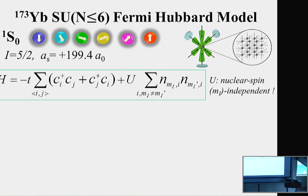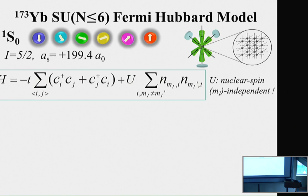In our experiment, we successfully implement the SU6 Fermi-Hubbard model by working with Ytterbium-173, which has nuclear spin 5/2 and repulsive interaction with a positive scattering length. The SU6 Fermi-Hubbard model is given by this Hamiltonian, where the on-site interactions are nuclear-spin-independent. This assures the SU(6) spin symmetry of the system.